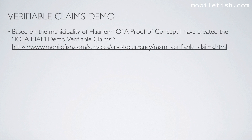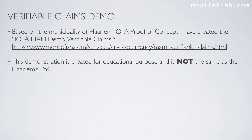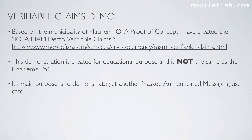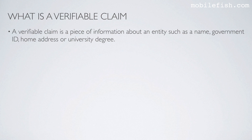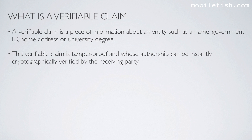Based on the Municipality of Haarlem IOTA proof-of-concept, I have created the IOTA MEM demo verifiable claims. This demonstration is created for educational purpose and is not the same as Haarlem's proof-of-concept. Its main purpose is to demonstrate yet another mask-authenticated messaging use case. A verifiable claim is a piece of information about an entity such as a name, government ID, home address, or university degree — tamper-proof and cryptographically verifiable by the receiving party. Verifiable claims are also known as attestations.